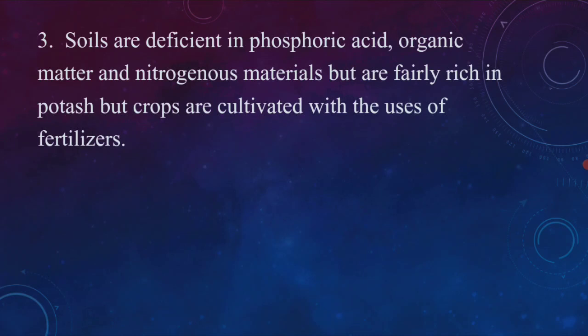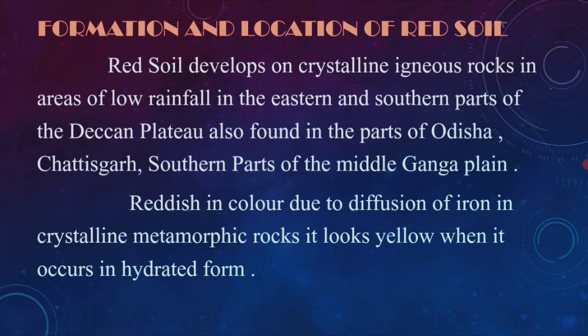This is the formation and location of red soil. Red soil is developed by crystalline igneous rocks. This is the rainfall region — eastern and southern parts of the Deccan plateau, Odisha, Chhattisgarh, southern parts of the middle Ganga plain. This is the red soil of India.